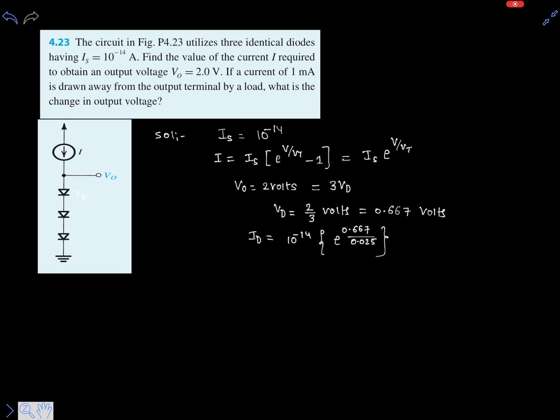Calculating 10 to the power of minus 14 multiplied by exponential of 0.667 over 0.025 gives 3.8634 milliamperes, which we approximate as 3.9 milliamperes.